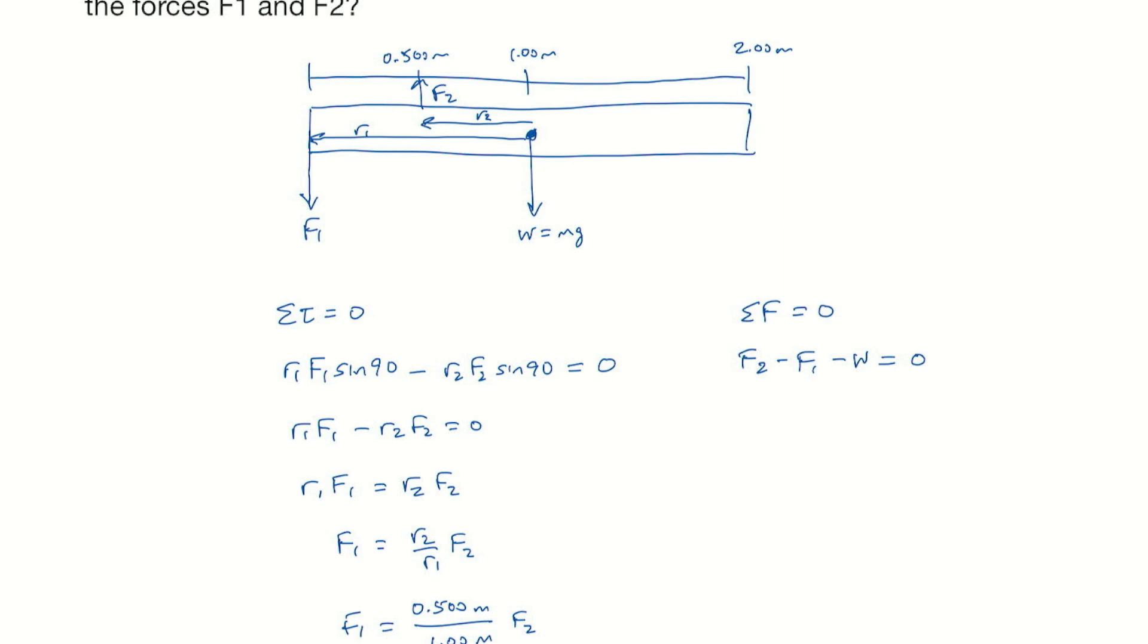And so if we solve for F2, we add F1 to both sides and add the weight to both sides. And so F2 is going to be F1. F1, we just said was 0.500, I'll leave off the units for now, F2, and then weight is Mg.